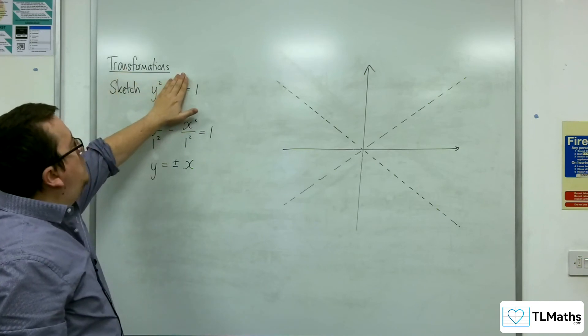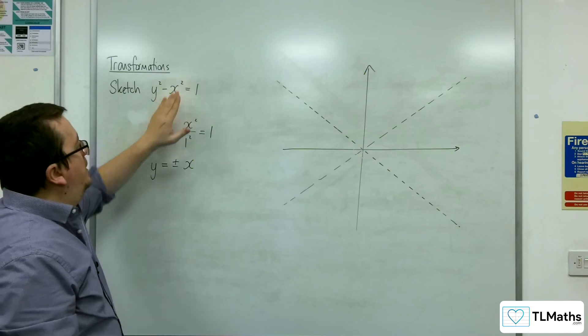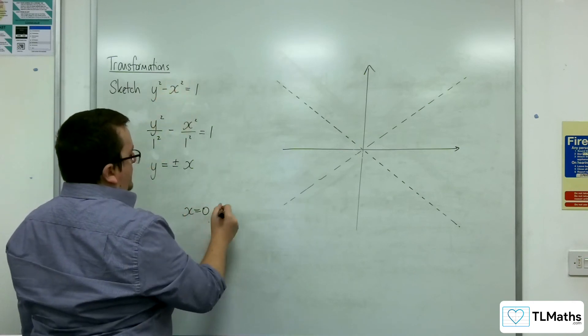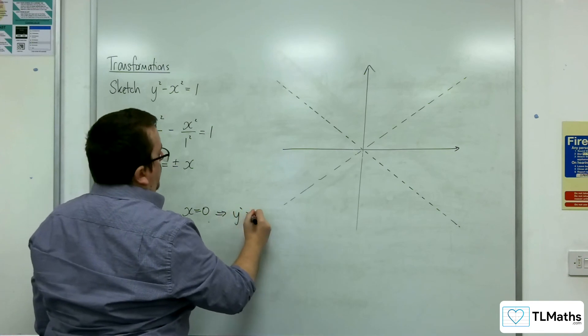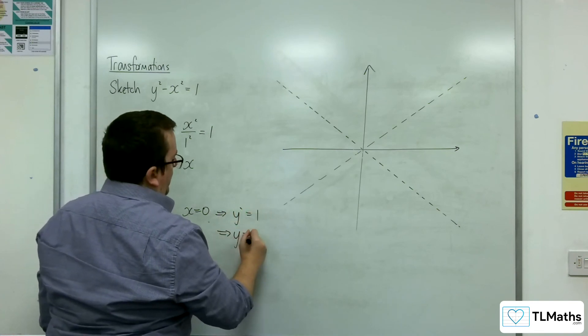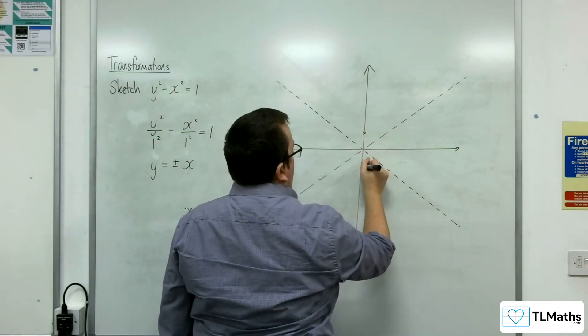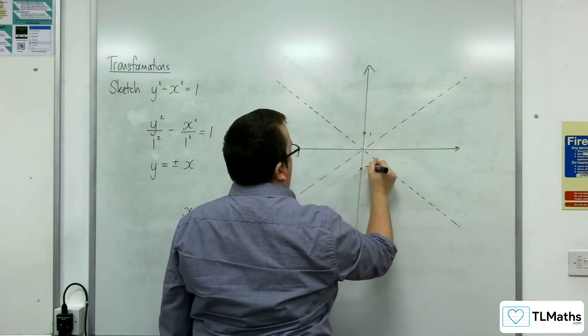So, when x is 0, we actually get plus or minus 1. So, when x is 0, we get y squared equals 1. So, y is plus or minus 1. And so, we're going through this point and this point, 1 and minus 1.